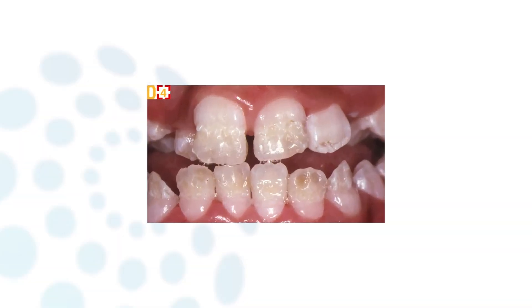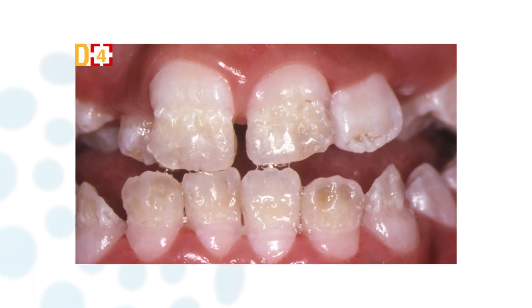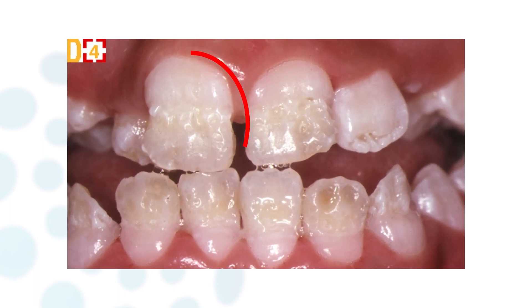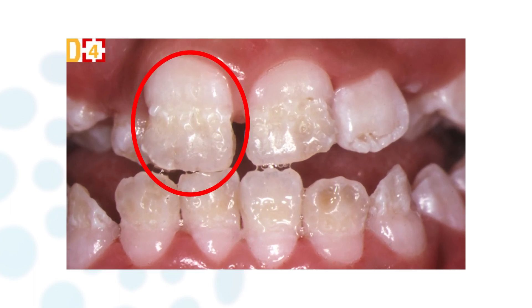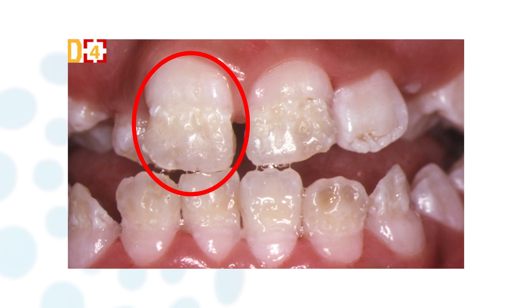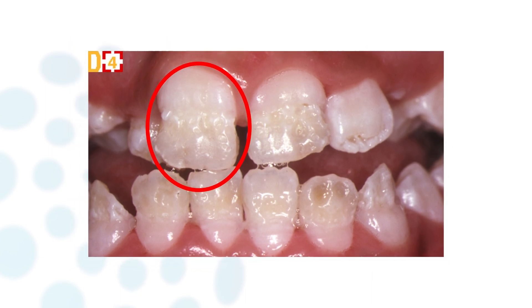A group of teeth will show defects at different levels of the crown, depending on the stage of crown formation when the insult occurred. These types of defects are considered as chronological developmental disturbances.